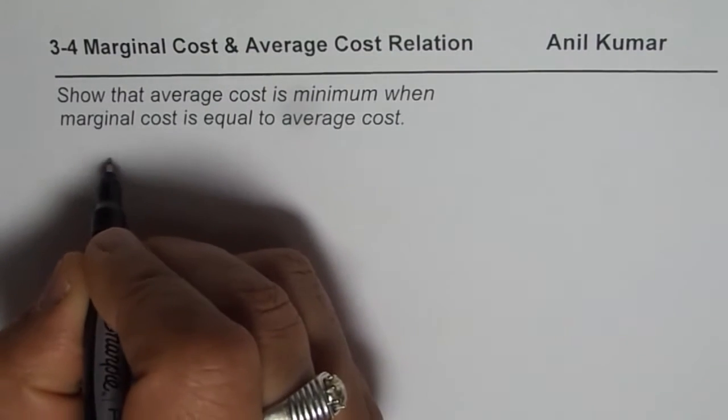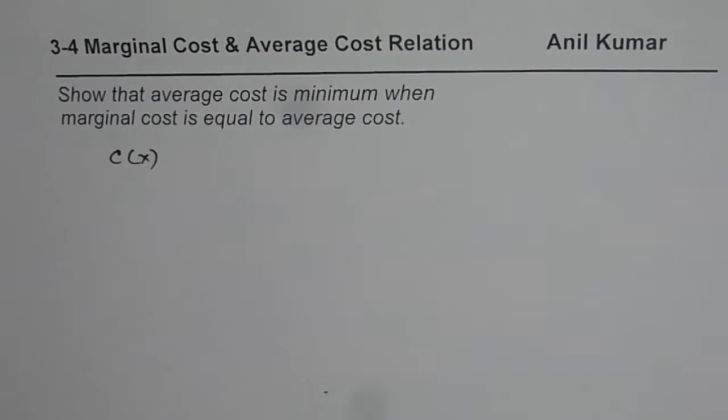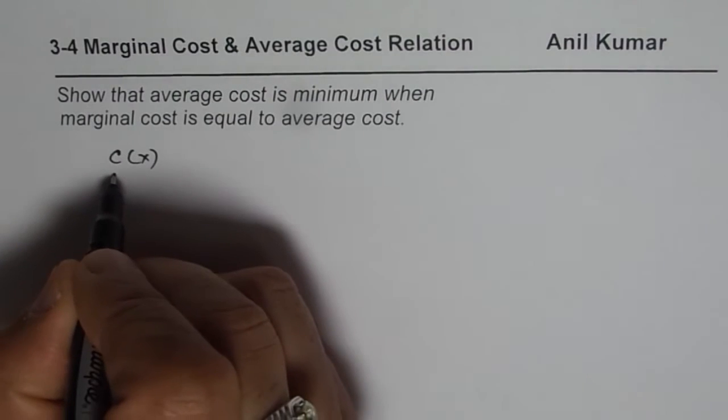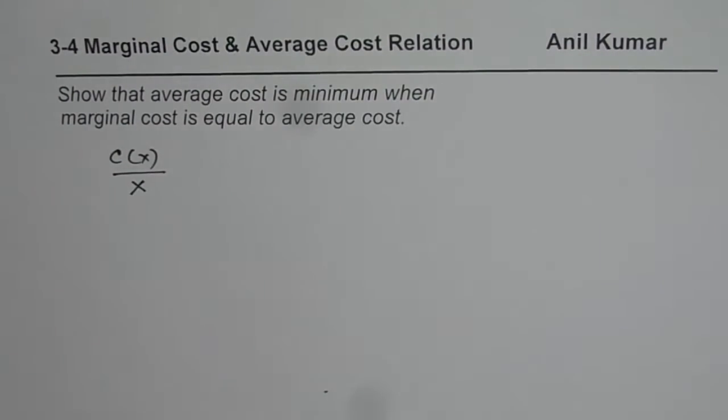Now first, average cost. So let us say c(x) is cost of producing items. Then what is the average cost? Average cost will be c(x) divided by x. So that is going to be the average cost of producing any item.